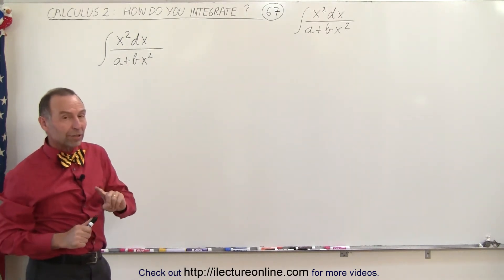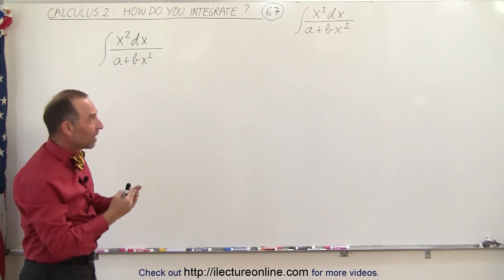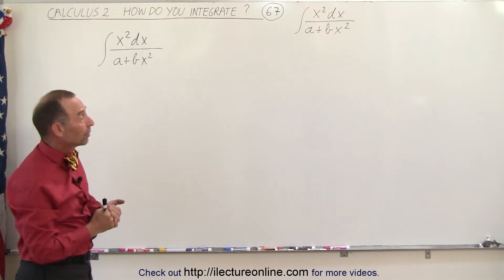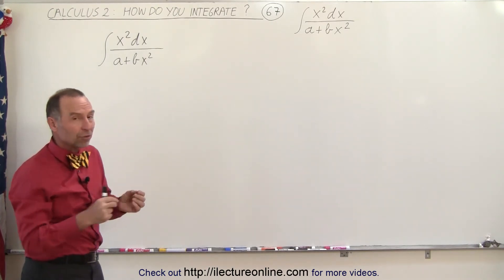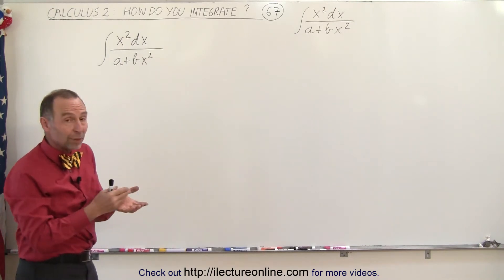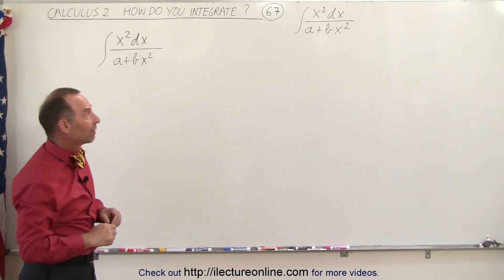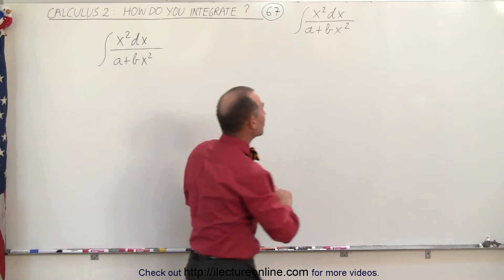But since the order in the numerator and the denominator is the same, both of them are x squared, we can divide the denominator into the numerator to see what we end up with and sometimes we can then integrate what we have left over. So let's see what we can do here.